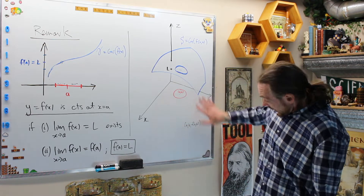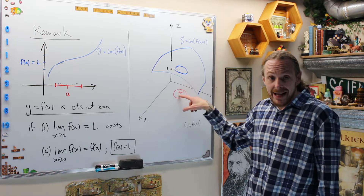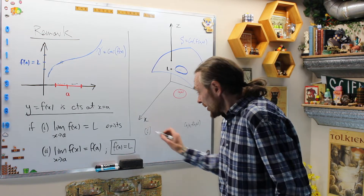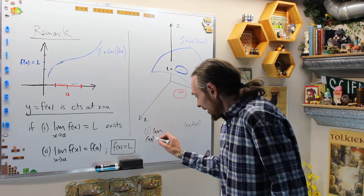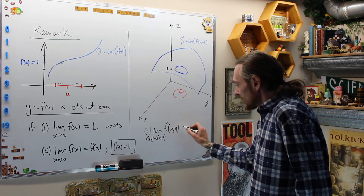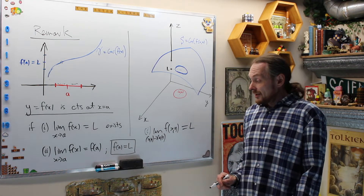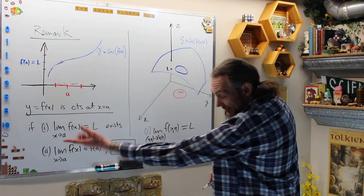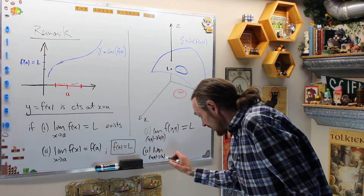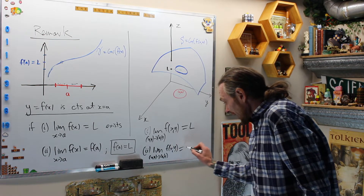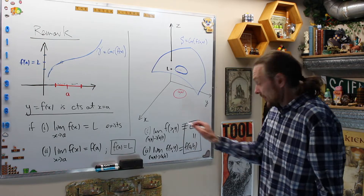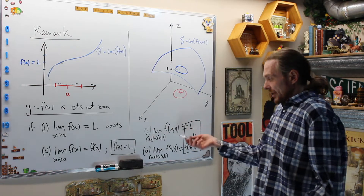Now in two dimensions, as (x, y) gets arbitrarily close along any path towards (a, b), we need two conditions. One: the limit as (x, y) approaches (a, b) of f(x, y) must exist and equal L, still a finite number. Two: that limit must also equal f(a, b). So those will be equal — that's the same analogous definition, just now in two dimensions instead of one.